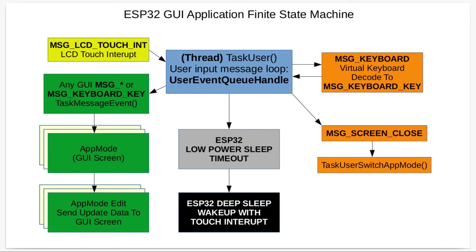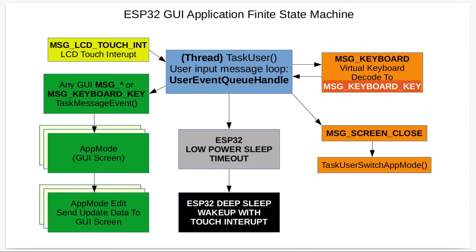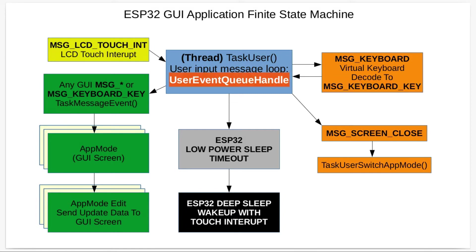There are a couple of system messages handled first. If the display is showing the virtual keyboard, it will receive a keyboard event from resolving the X, Y coordinates on the display. The message loop calls a function which converts the keyboard X, Y location to an actual key press and sends back a keyboard key message to the message loop, which is then passed on to the user handling routines.